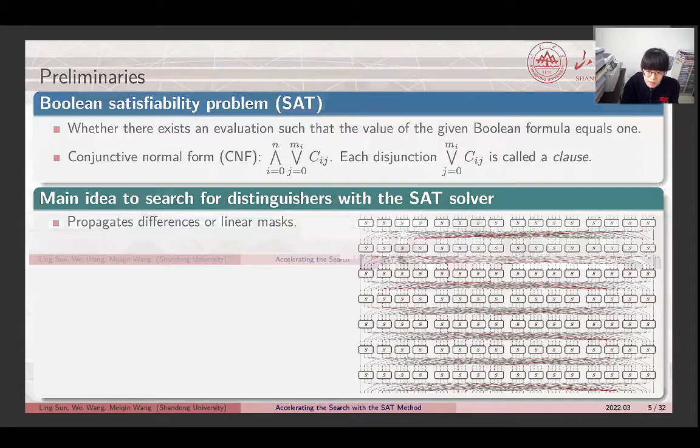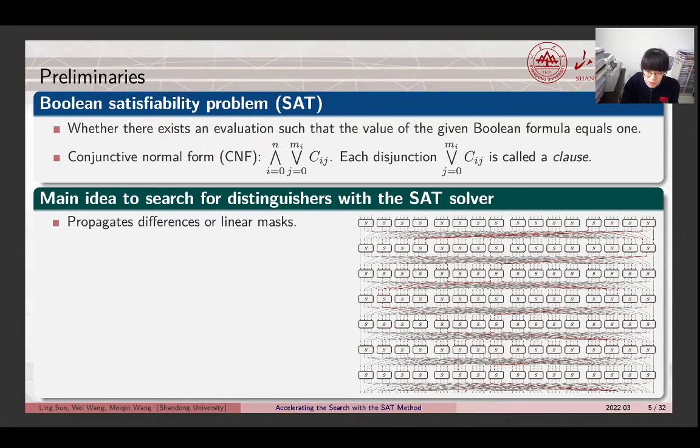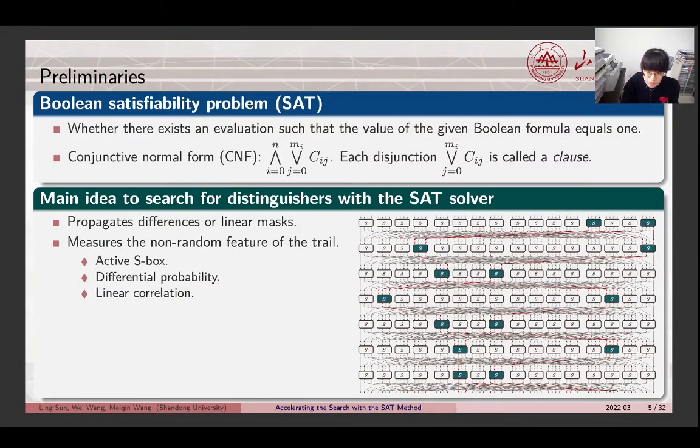The clauses in a CNF formula regarding the search of differential or linear distinguisher are classified into two groups. The first group represents the propagations of difference or linear masks inside the cipher. The second one measures the non-random feature of the trail, which can be set as the number of active S-boxes, the differential probability, or the linear correlation.